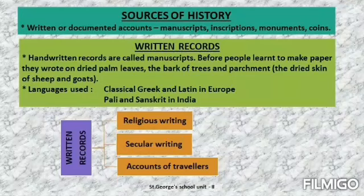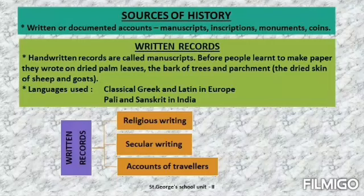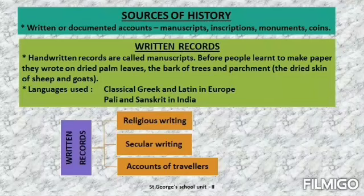What are written records? Handwritten records are called manuscripts. Handwritten means written by hand. Before people invented paper, they used to write on bright palm leaves, bark of trees and parchment. Parchment means the dried skin of sheep and goats.